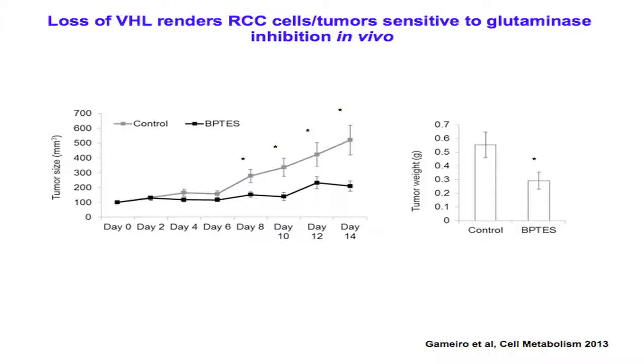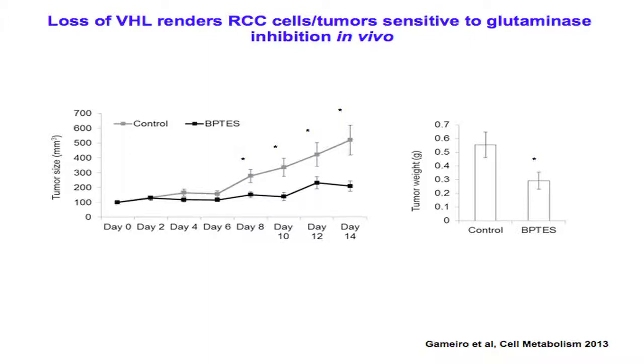There are clinical-grade inhibitors now approaching the market, and we are partnering with a pharmaceutical company to try some of these clinical-grade inhibitors. So I present two potential targets: one, HIF2-alpha itself, and the other, glutaminase — which is the consequence of the metabolic deregulation of the cell by HIF. These are the people working in my lab and my many collaborators. Paolo Gamero led the metabolic studies, and Anna Metello is leading the HIF2 inhibitor studies in the zebrafish model I showed you. Thank you very much for your attention.